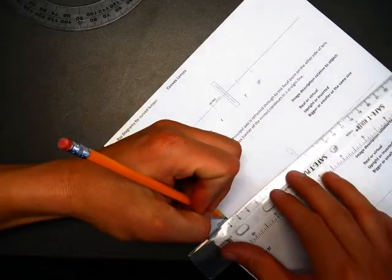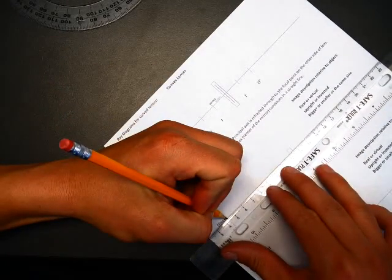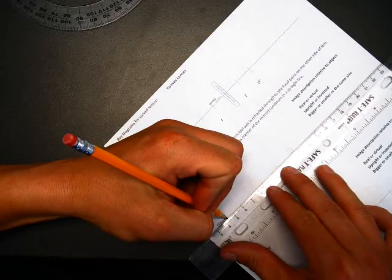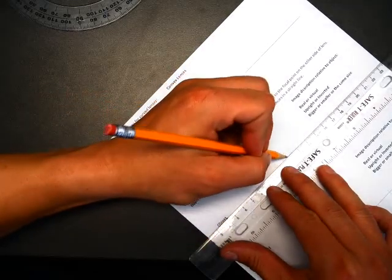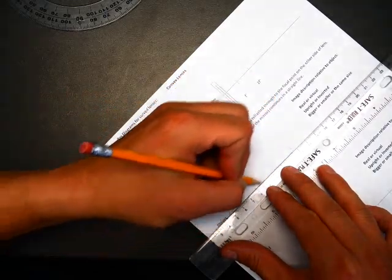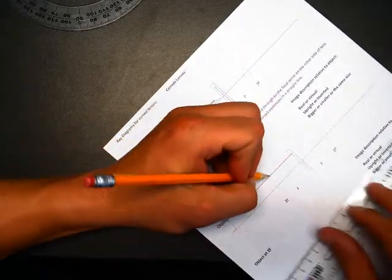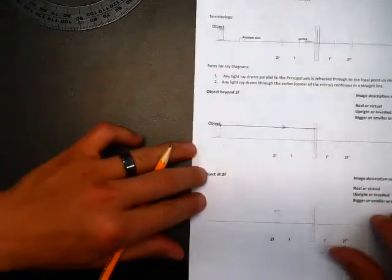So I go from line to line, and I look here, and then I draw it like that. Any light ray drawn parallel to the principal axis - I've done that, that's parallel.